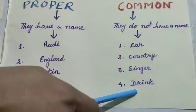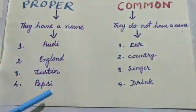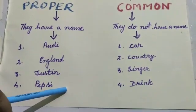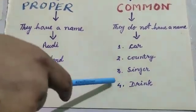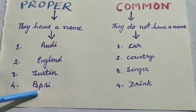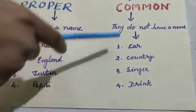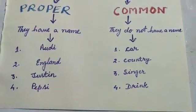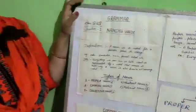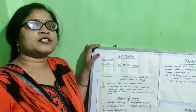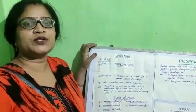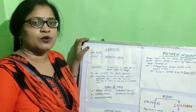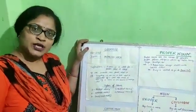In the same way, 'drink' — any cold drink or anything — is common noun. But if a specific name is given, like Pepsi, Sprite, Limca, or whatever you like, it becomes proper noun. So if a name is given, it becomes proper noun, and if a name is not given, it becomes common noun. I hope I have been successful in making it easier for you to identify and classify common and proper noun. Thank you so much.